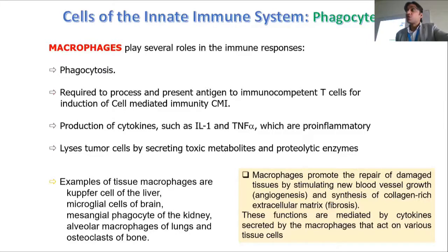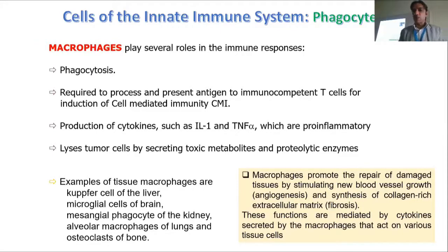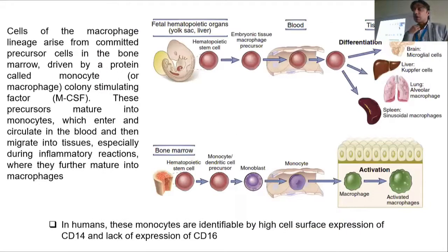We need transcription factors to trigger and promote the repair function. After cells are lost due to infection, you need to repair that place — including more blood vessels to supply nutrients. This is called angiogenesis: the creation of new blood vessels. You also need more extracellular matrix material to rebuild and repair the tissue. These functions are mediated by cytokines released by macrophages.